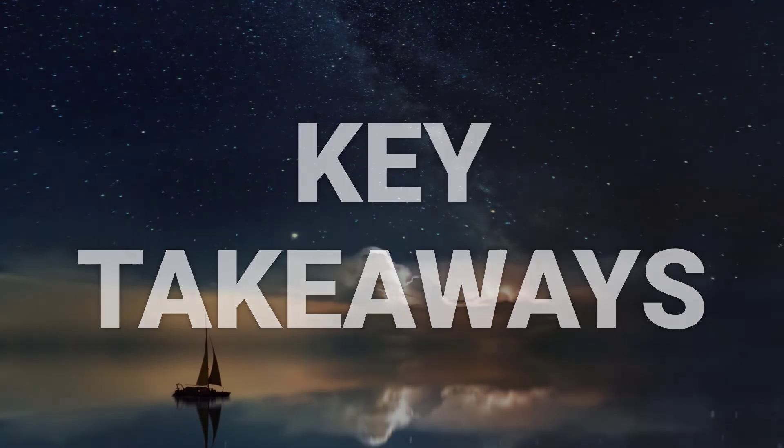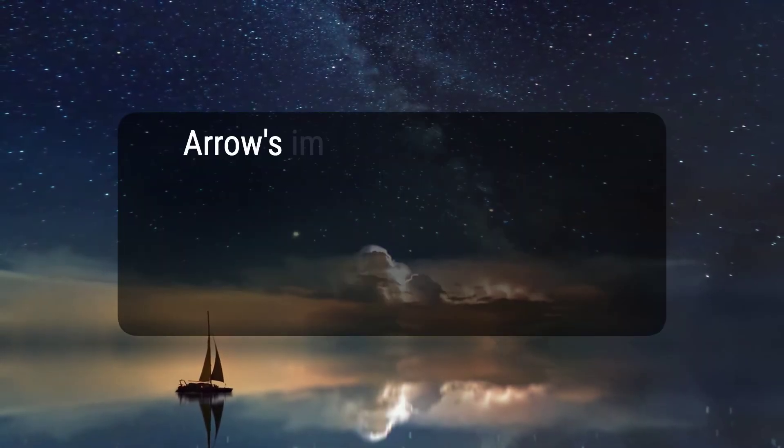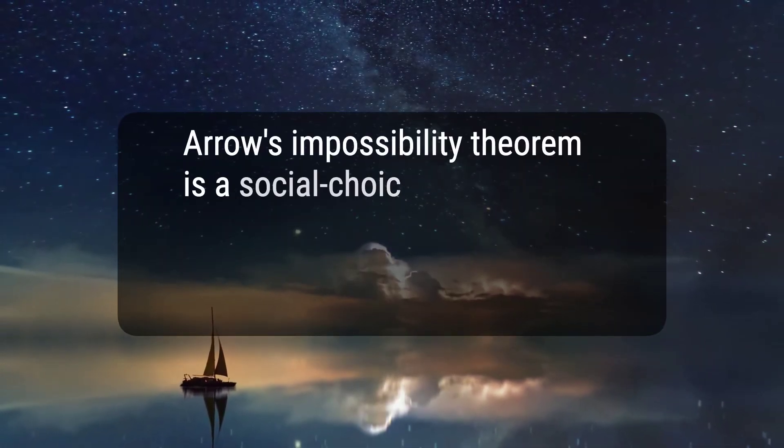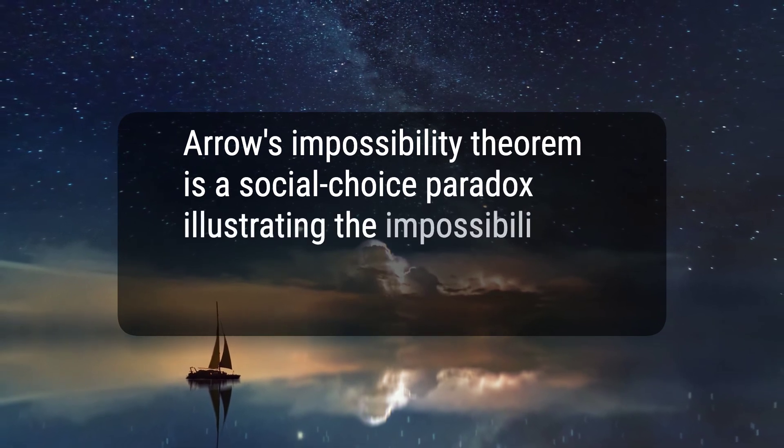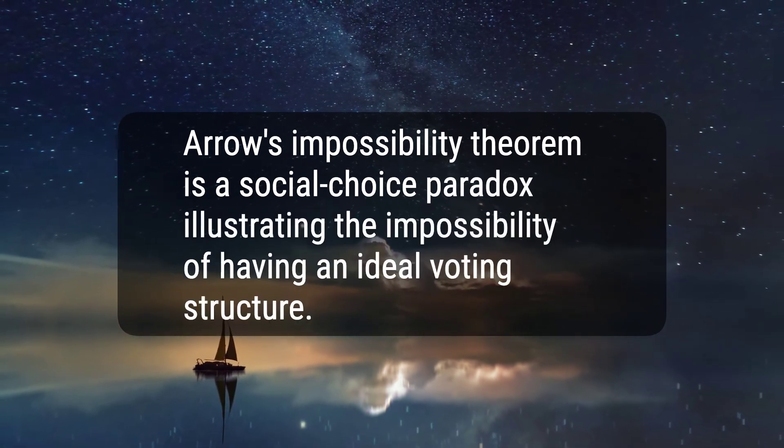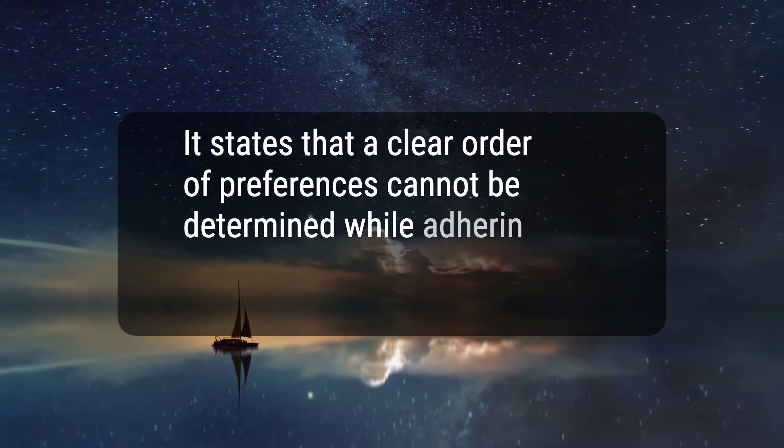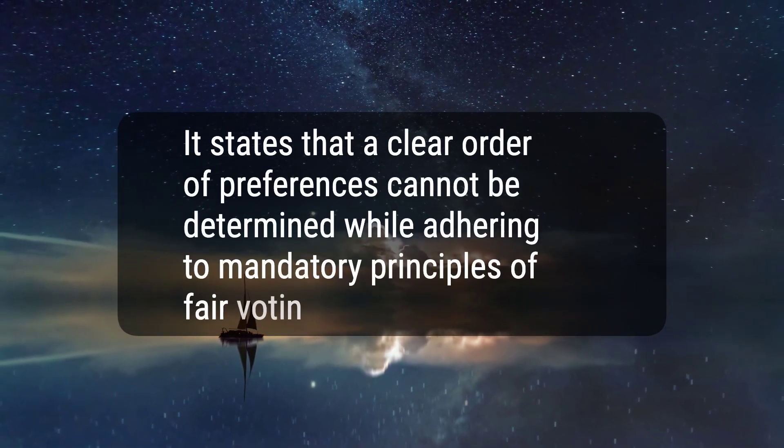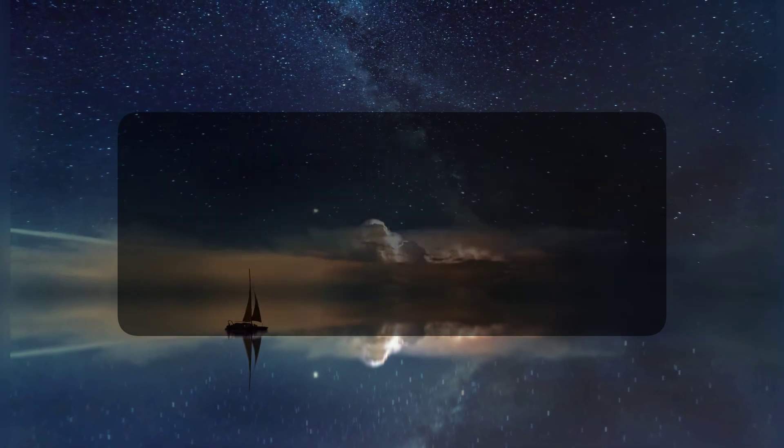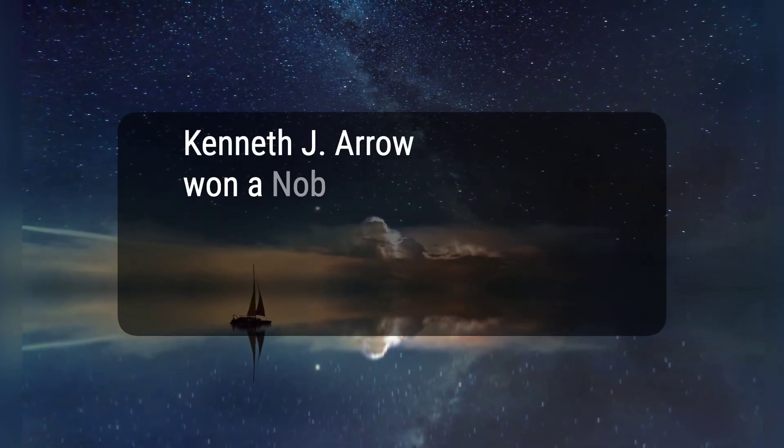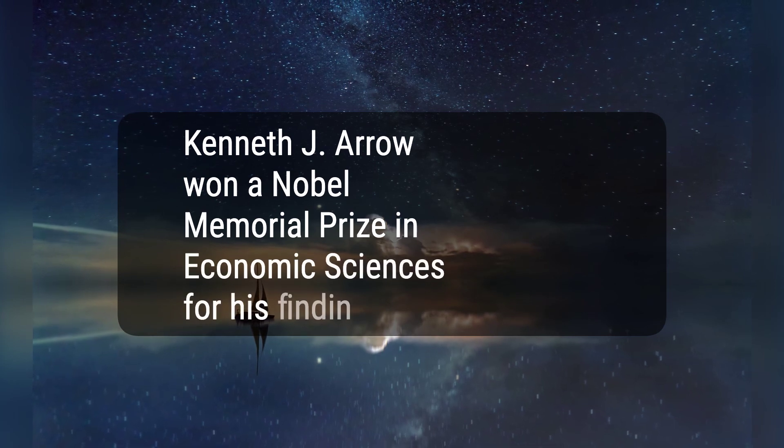Here are three key takeaways. 1. Arrow's impossibility theorem is a social choice paradox illustrating the impossibility of having an ideal voting structure. 2. It states that a clear order of preferences cannot be determined while adhering to mandatory principles of fair voting procedures. 3. Kenneth J. Arrow won a Nobel Memorial Prize in Economic Sciences for his findings.